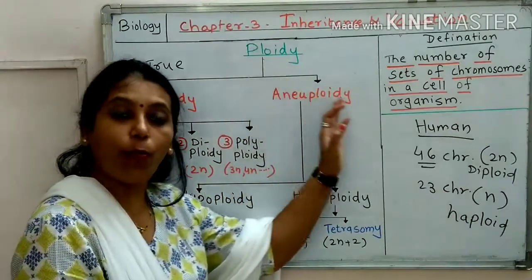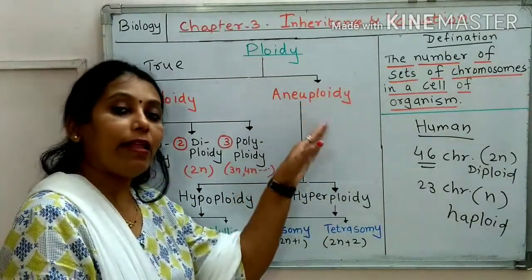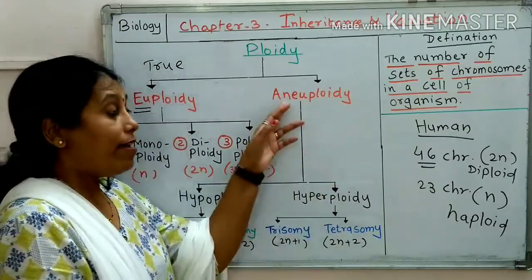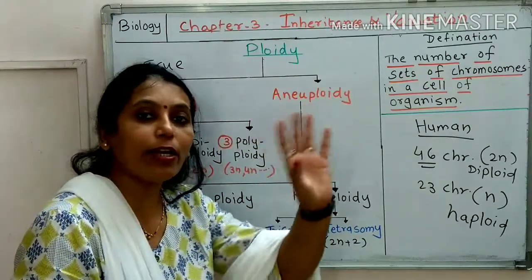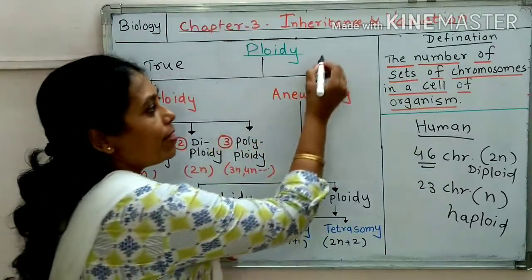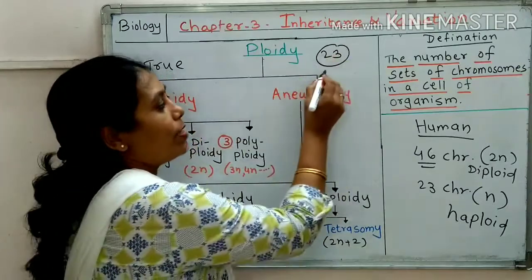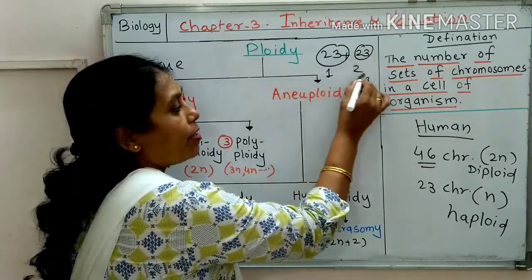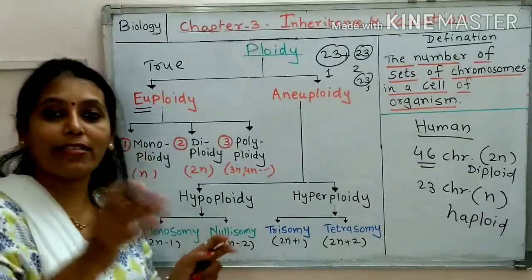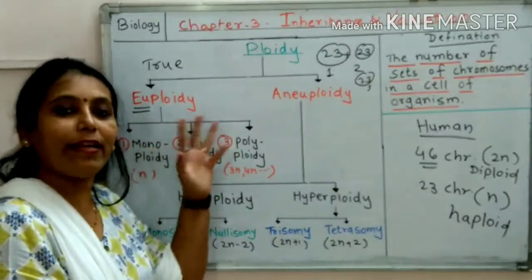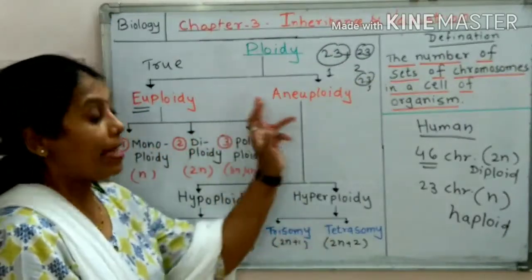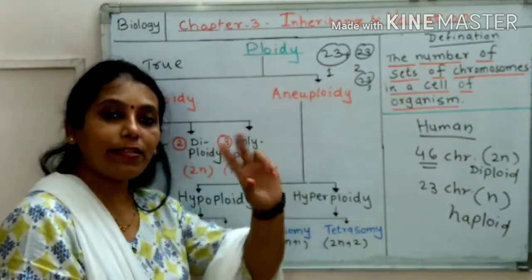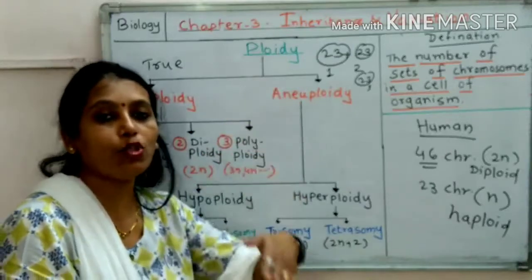In aneuploidy, the number of individual chromosomes either increases or decreases. Here it is not the chromosomal set that is increasing — a set means, for example, 23 chromosomes is one set, then another 23 is a second set, and so on. In aneuploidy, only one chromosome will increase, or two chromosomes will increase, or one chromosome will be less, or two chromosomes will be less.